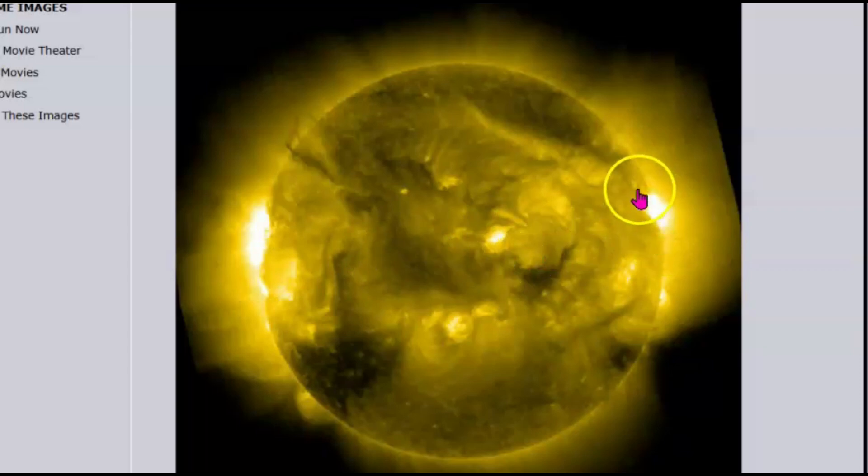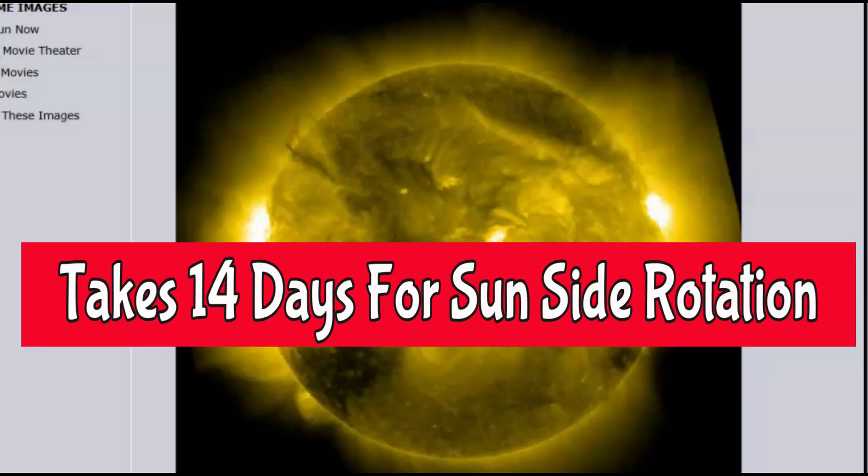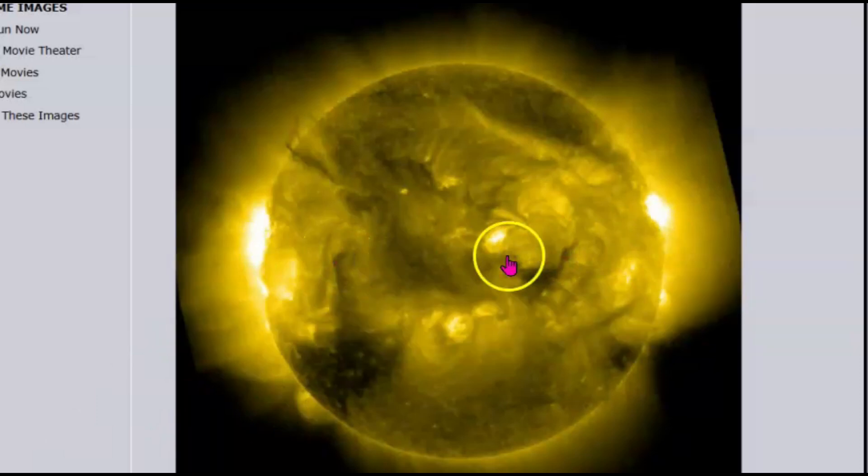And then we got the corona holes. We actually got two of them, pretty significant. One here that's going to be rotating towards the earth, and then we got a smaller one. It takes about 14 days for the sun to make a rotation from east to west. You have 14 days to make that complete rotation across earth facing.